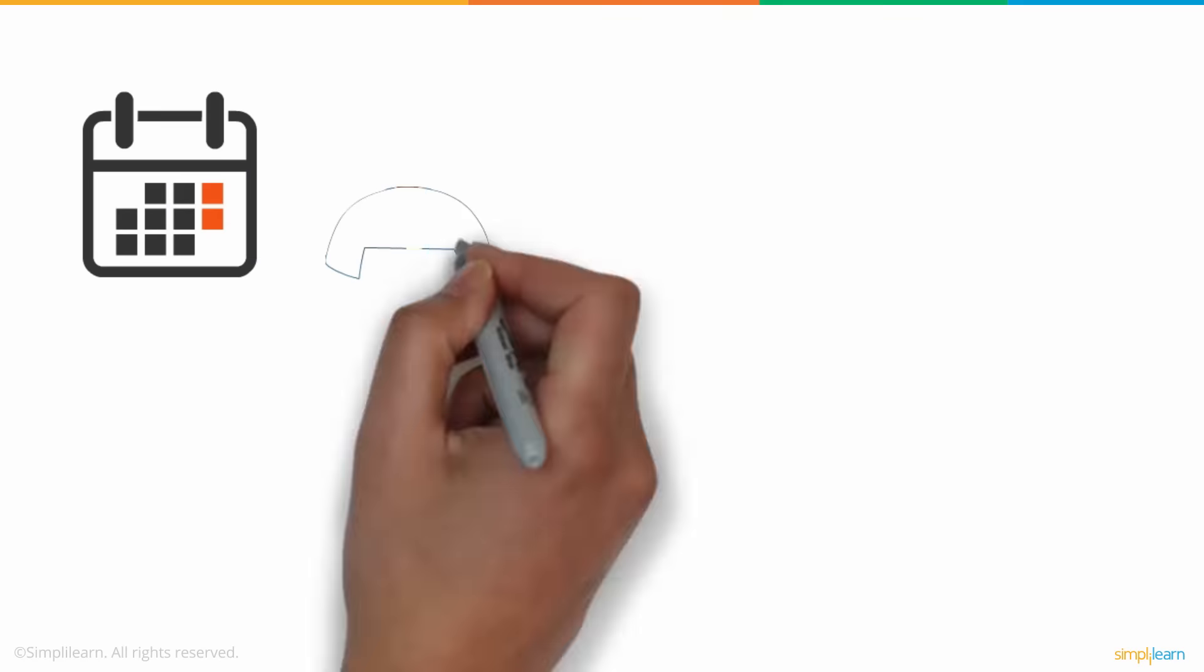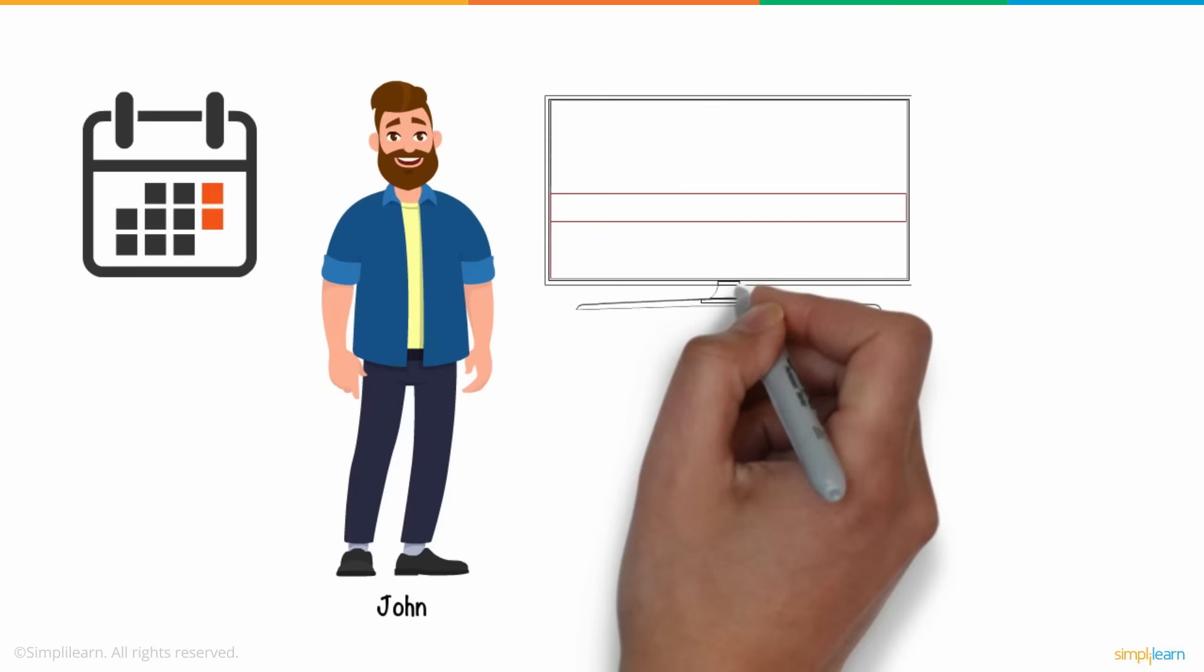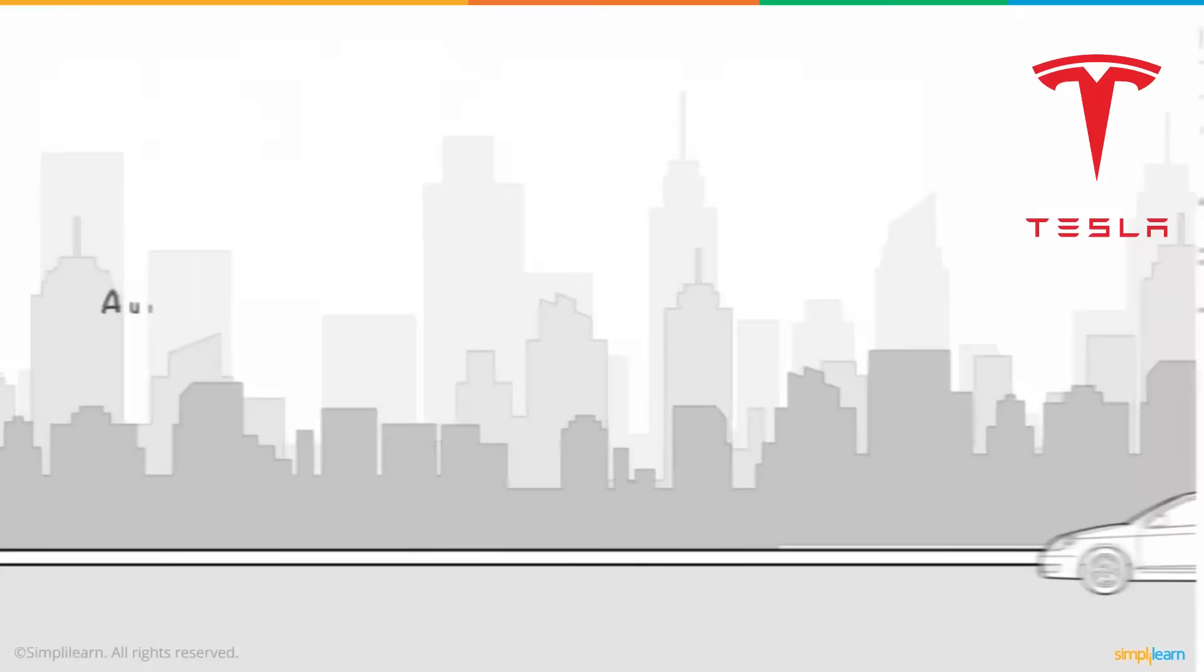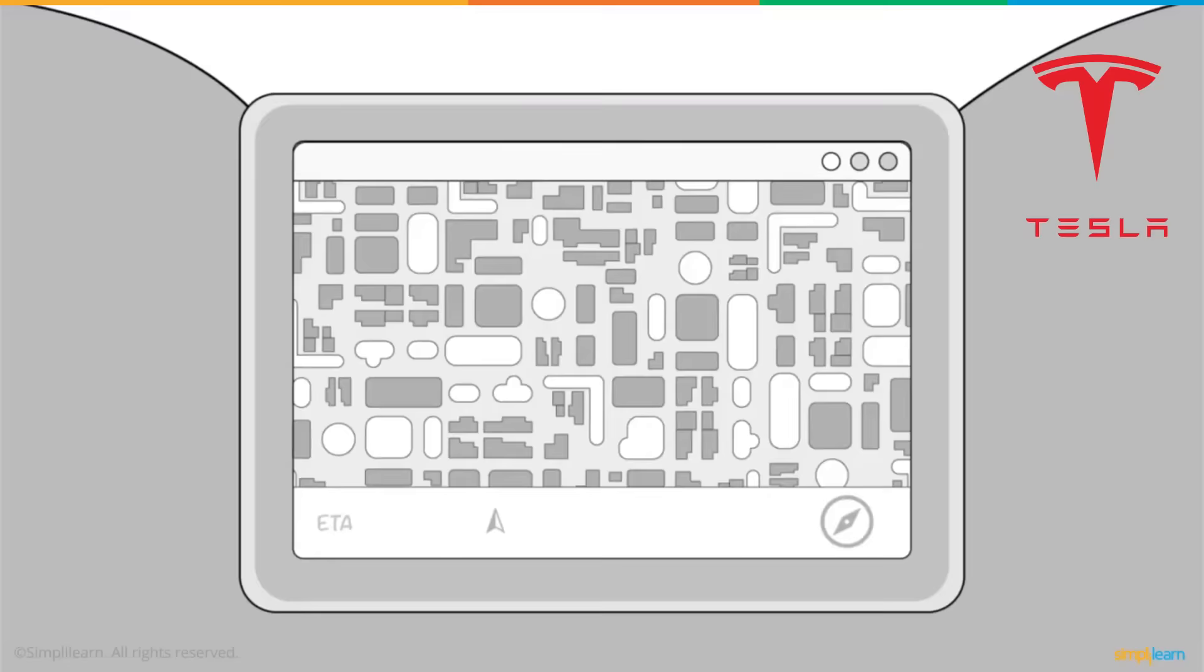It's a weekend, and John decided to watch the latest movie recommended by Netflix at his friend's place. Before heading out, he asked Siri about the weather and realized it would rain.